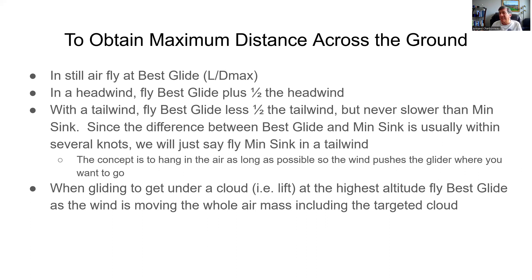When gliding to get under a cloud where you think there's going to be lift, and you want to get there at the highest altitude, fly best glide — not accounting for the wind — because that cloud and that lift are going to be moving with the wind just like you are. It's like swimming in a river trying to reach a floating inner tube; it's going to move with the current.